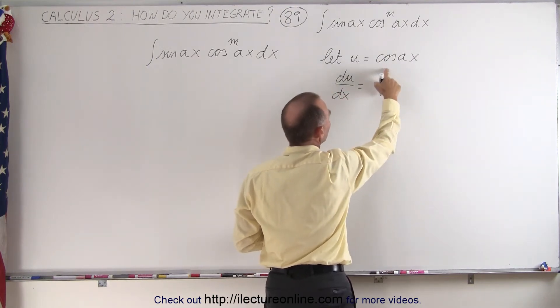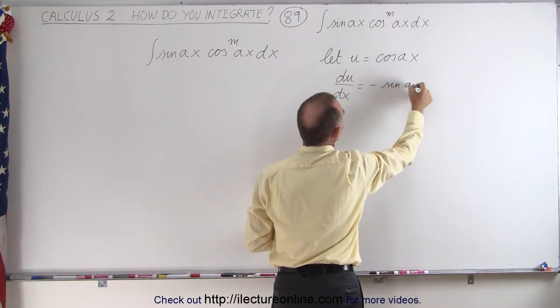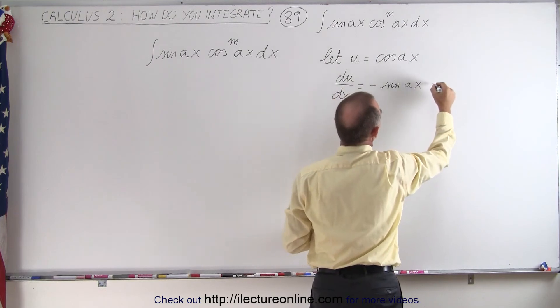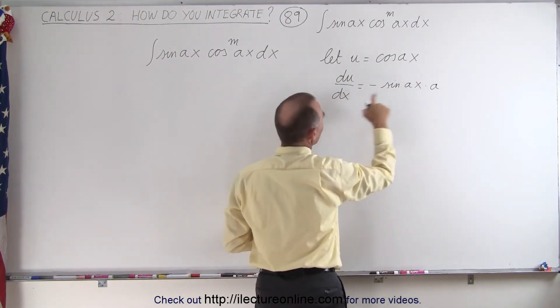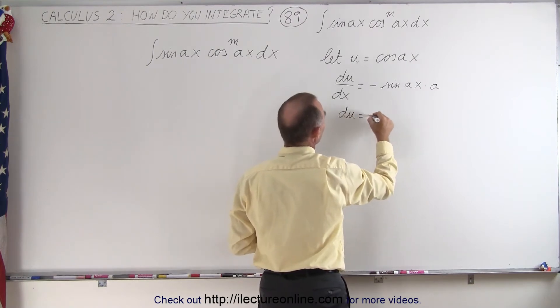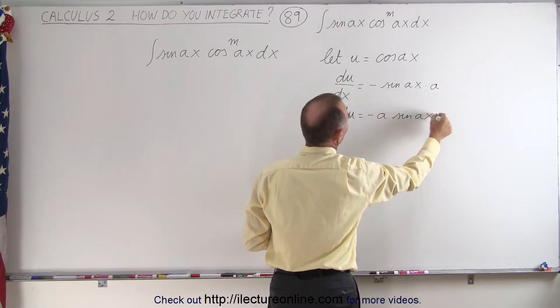is going to be equal to the negative sine of Ax times the derivative of the constant, which is going to be a, so times a. And putting the dx over here and the a in front, we can say that du then is going to be minus a times the sine of Ax dx.